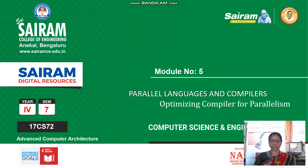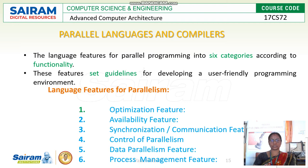Hi students. In this video we are going to discuss about the topic parallel languages and compiler in module 5. The language features for parallel programming are divided into 6 categories according to the functionality. These features set the guidelines for developing a user-friendly programming environment.